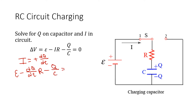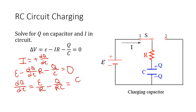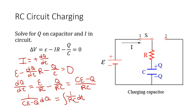Now that we have that defined, let's find q. We have: ε minus (dq/dt)·R minus q/C equals zero. Isolating dq/dt gives us ε/R minus q/(RC), which we can write as (Cε minus q) over (RC). Next we divide to separate variables: one over (Cε minus q) · dq equals (1/RC) · dt. Taking the definite integral of both sides from 0 to some time t prime.